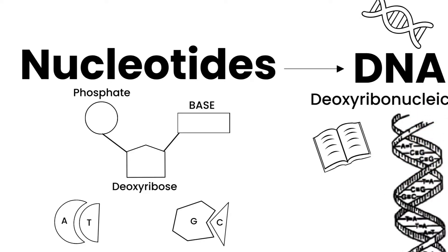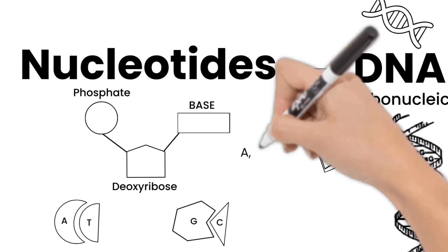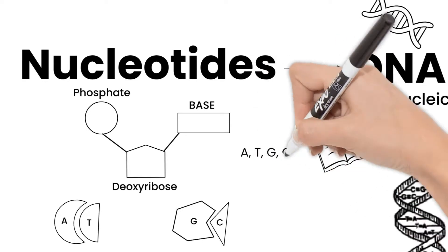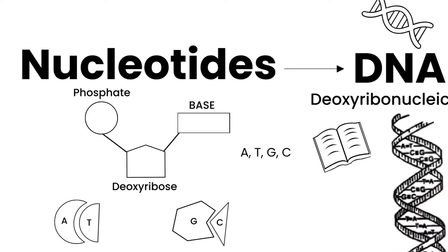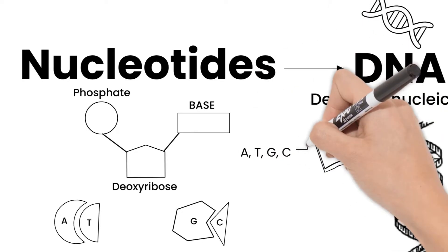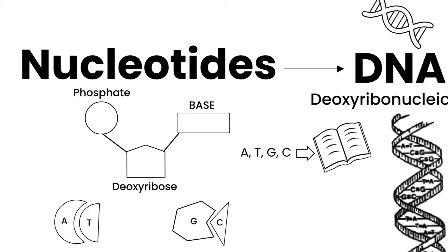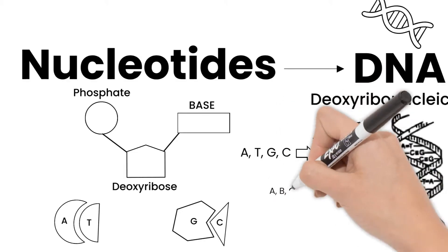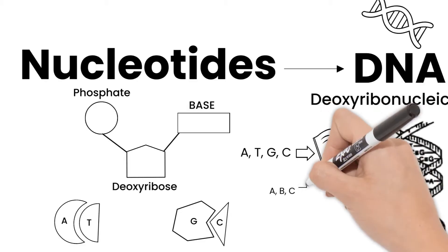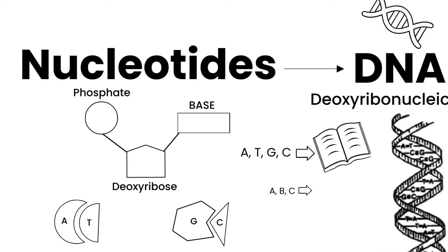The order of the A, T, G, and C bases on the strand of DNA create the instructions for the body, just like the combinations of letters in the alphabet create words, sentences, and books.